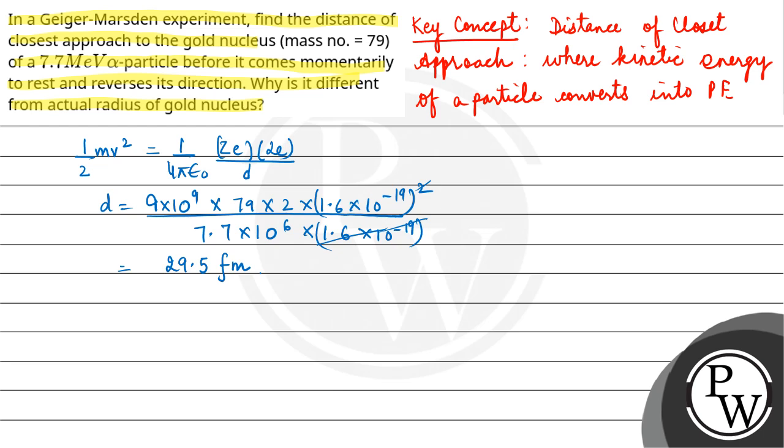So the other question is why this distance of closest approach is different from the atomic radii. If we talk about distance of closest approach, the distance of closest approach is larger than the nuclear radii, the nuclear radius.